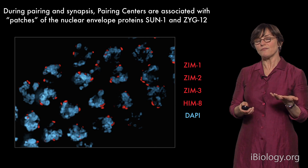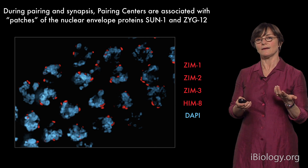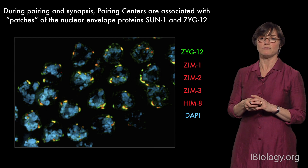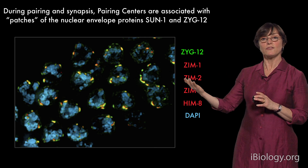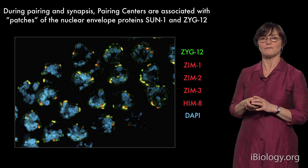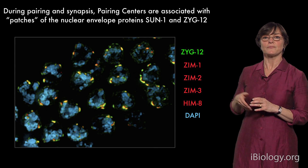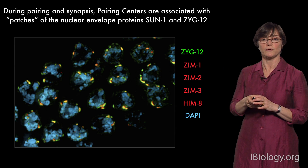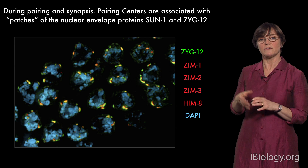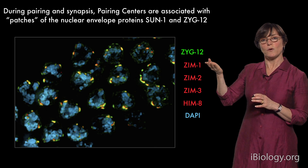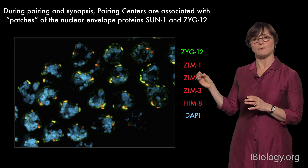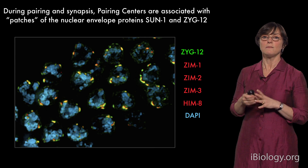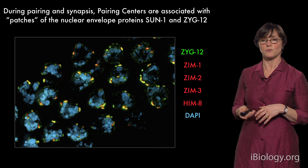Our first clue was really just an accident. We had a protein that had been tagged with GFP — green fluorescent protein — by other researchers working on the nuclear envelope and its role in other processes. They were studying this protein called ZYG12, which stands for zygotic lethal, because it's an essential protein that's a component of the nuclear envelope. When we looked at ZYG12 in early meiotic nuclei, it precisely co-localized with these pairing centers, suggesting there might be an interaction between the pairing centers and ZYG12.